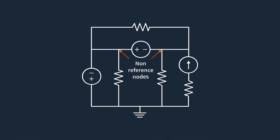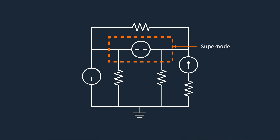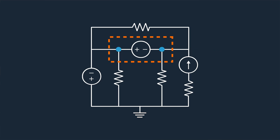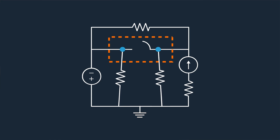To address this, we use the concept of a supernode, which is formed when a voltage source connects two non-reference nodes. As the name suggests, we treat both nodes as a single node — a supernode — and apply KCL to the entire structure, simplifying the analysis. Instead of applying KCL separately at each node, we enclose both nodes within a single supernode and apply KCL to the entire supernode.